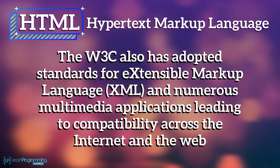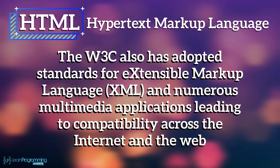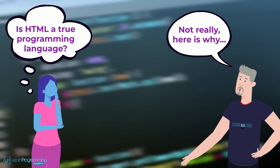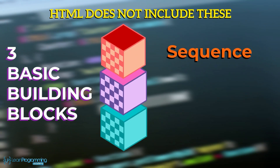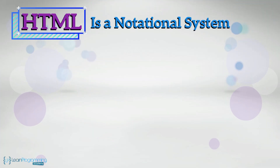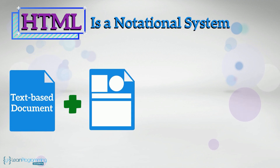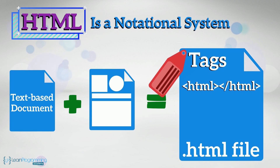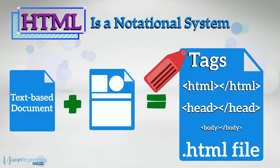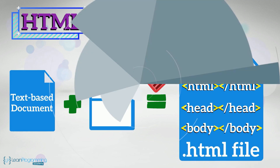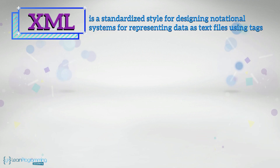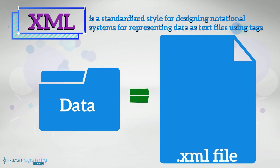The W3C has also adopted standards for Extensible Markup Language, XML, and numerous multimedia applications, leading to compatibility across the internet and the web. HTML as a language is not really a true computer language, as it doesn't include the three basic program structures such as sequence, selection, and looping. HTML is essentially a notational system in which a text-based document, along with its appearance, can be encoded as a simple text file using a concept called tags — for example, html, /html, head, /head, body, /body, and so forth, surrounded by less-than and greater-than signs. Similarly, XML is not a programming language per se, but is a standardized style for designing notational systems for representing data as text files, and it too uses tags.